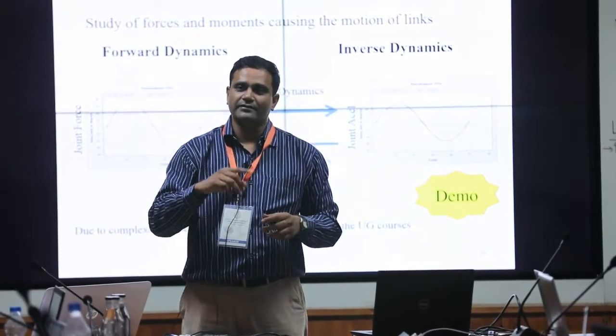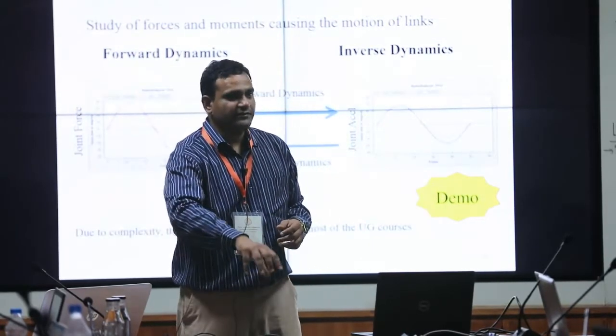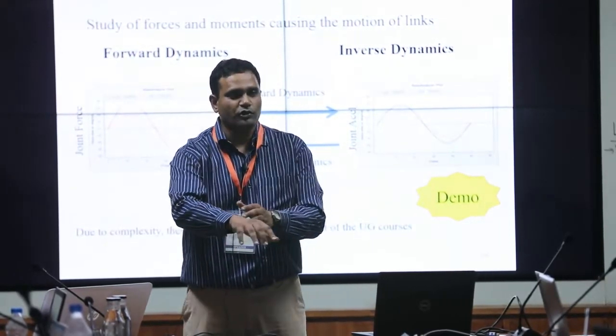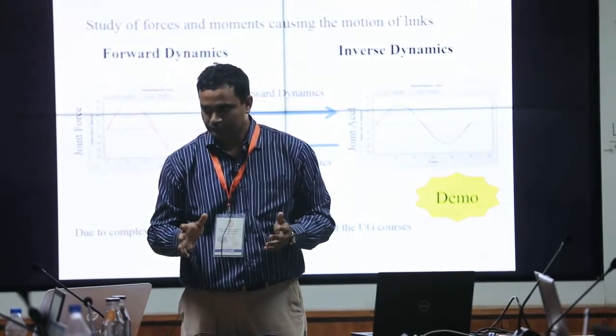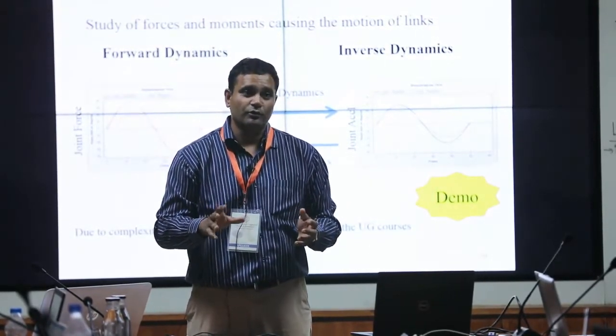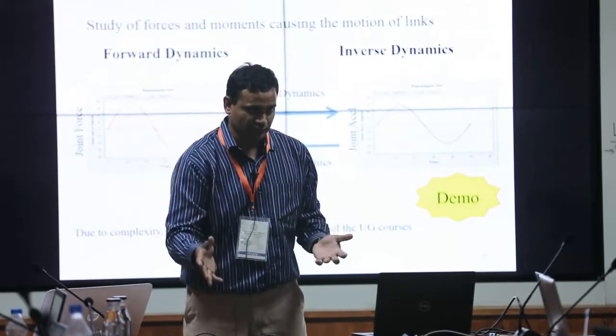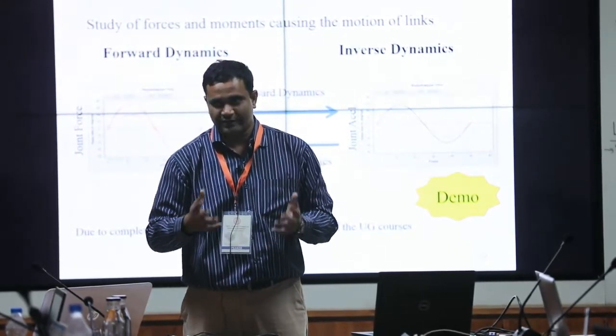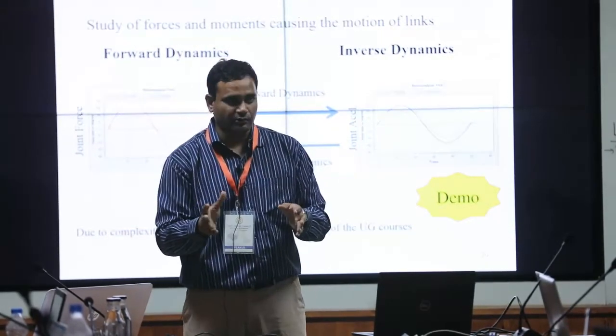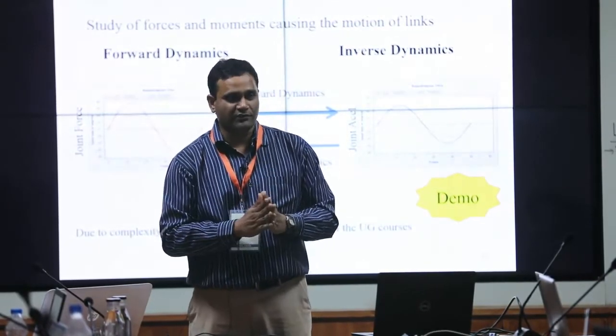So then we run something known as inverse dynamics. Inverse dynamics means to achieve a motion, what should be the torques that are to be given at each joint? So we know some value of torque that is required to achieve that motion, right, so we will choose a motor according to the torque. When I say motor - motor plus gearbox, encoder. This is nothing but inverse dynamics.